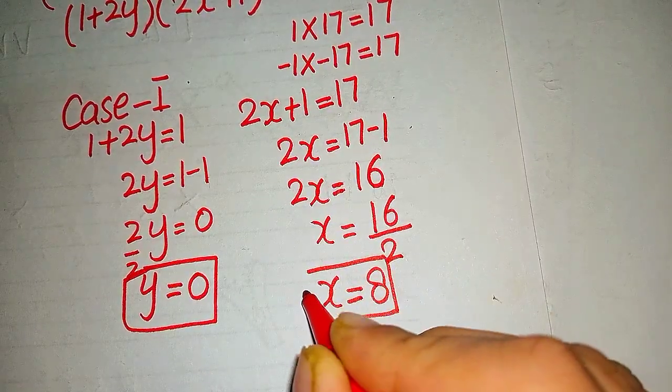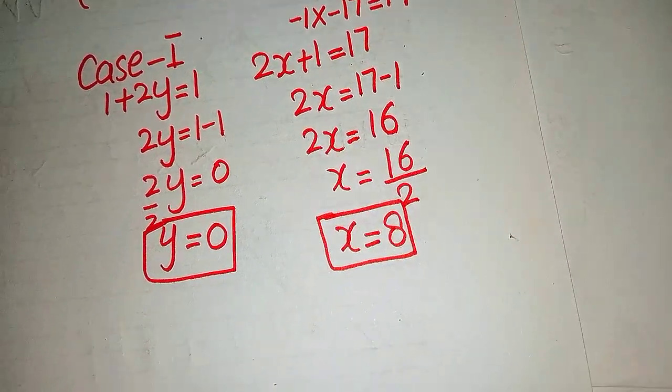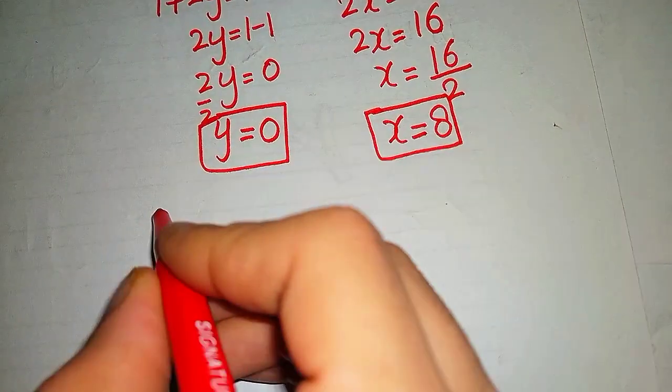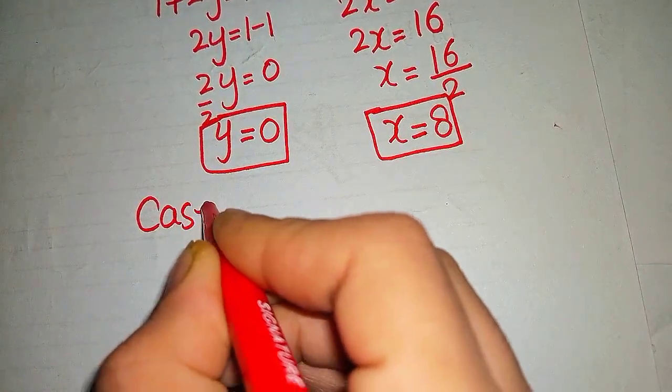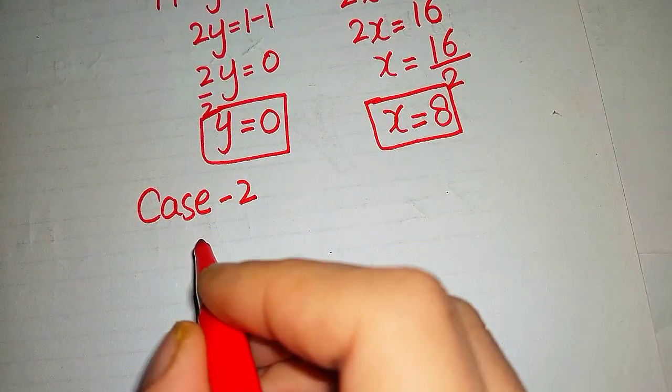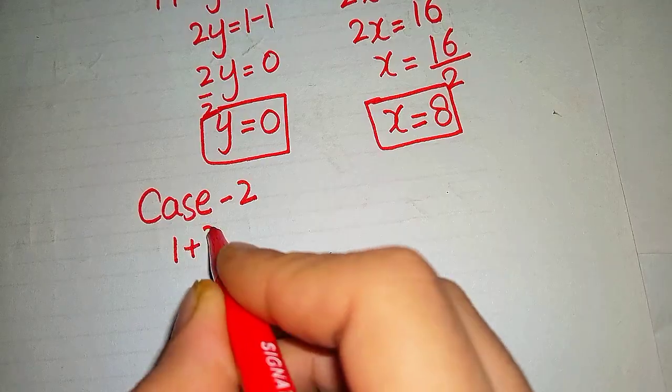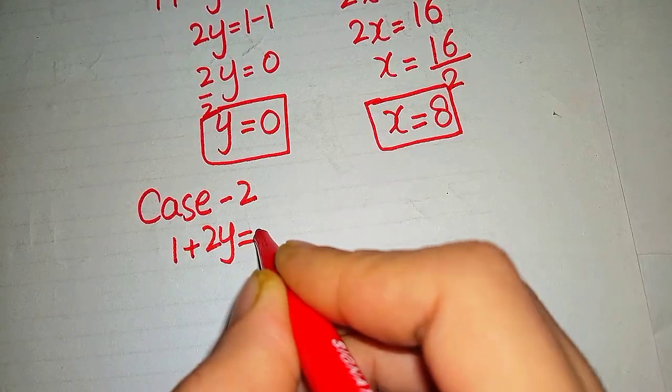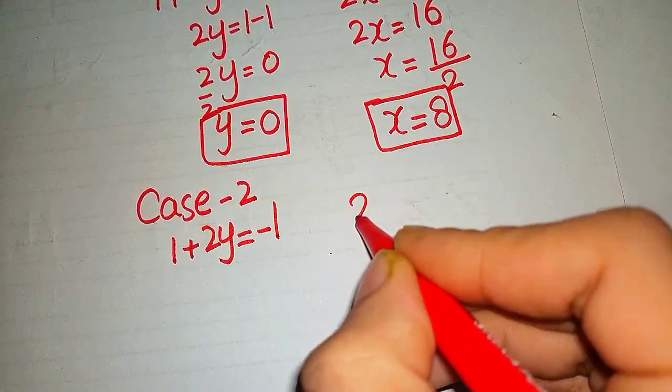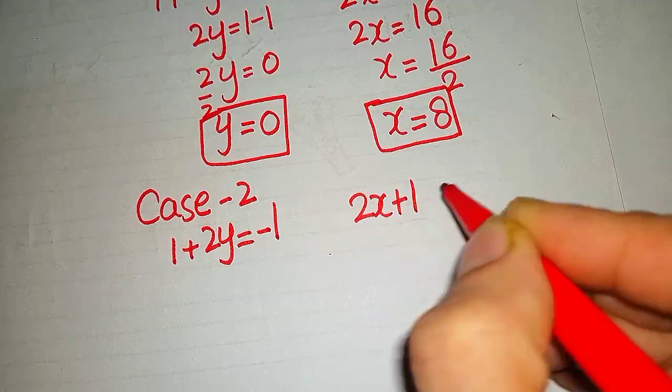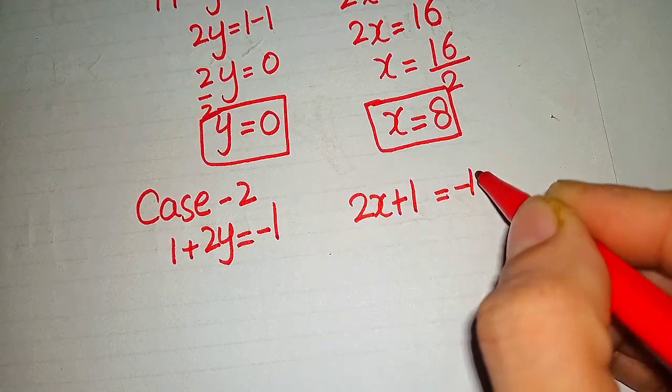Now we apply Case 2 here, such as 1 + 2y = -1 and 2x + 1 = -17.